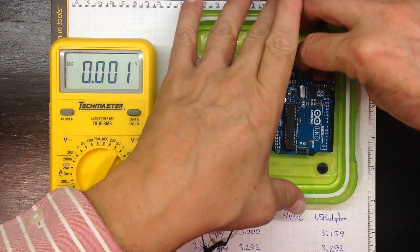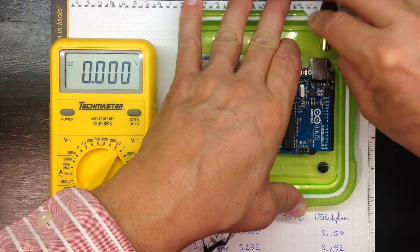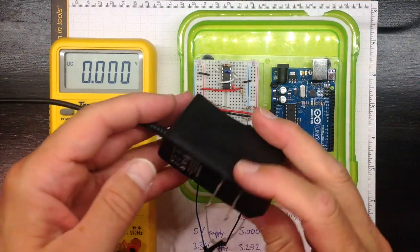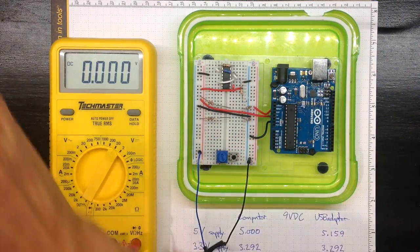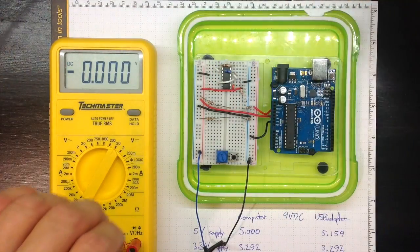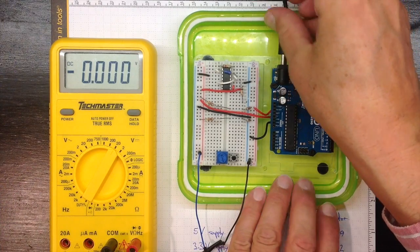Now I'll unplug the USB supply completely. I'm going to take this 9 volt DC adapter. I'll plug that into the wall and take the other end and plug it into the DC power supply for the Arduino.